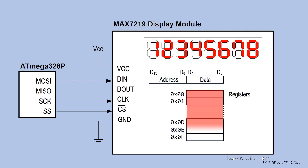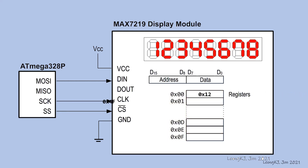There are 15 registers inside the MAX7219 Module. Each register has a unique address. The address starts from 00 to 0F. The content inside the registers determines the way the module operates.